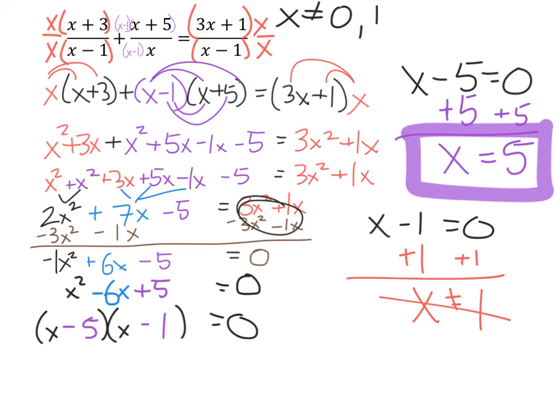Now, the final thing I would urge you to do again is to go back to the original equation. Plug x equals 5 just to make sure that both sides of the equal sign are equal. In other words, it would give you a true statement.